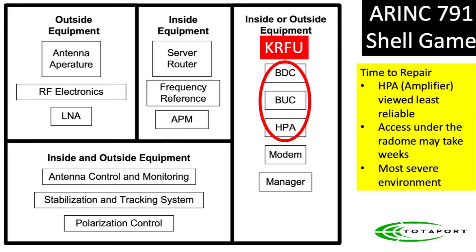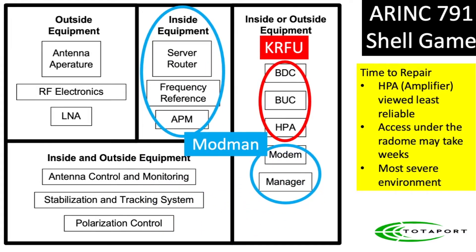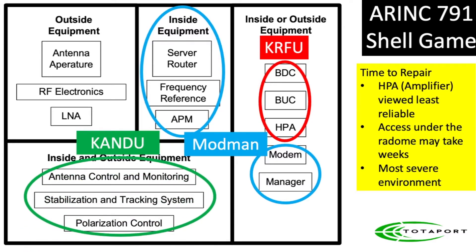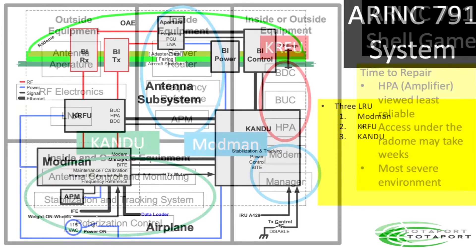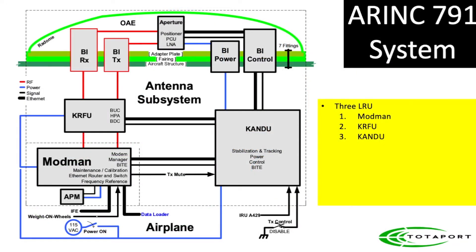We grouped the HPA and other equipment with the KRFU, or CURFU. We took the modem and associated equipment and called it the MODMAN. Then we took the rest and called it the KANDU. This, then, is the ARINC 791 system.